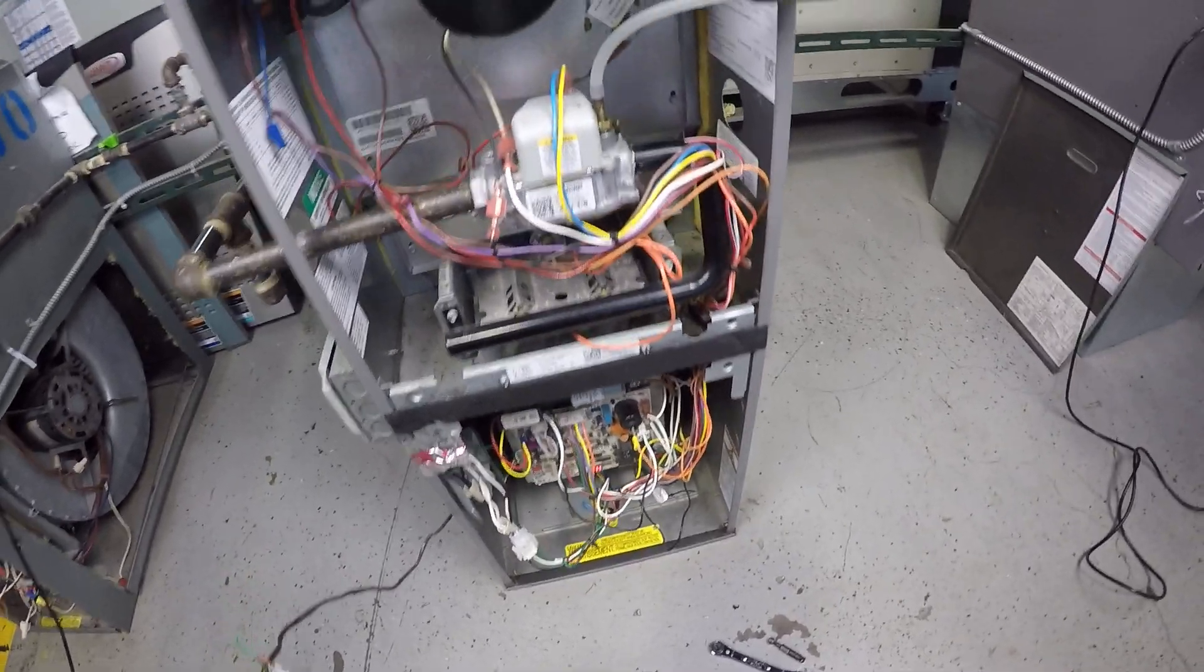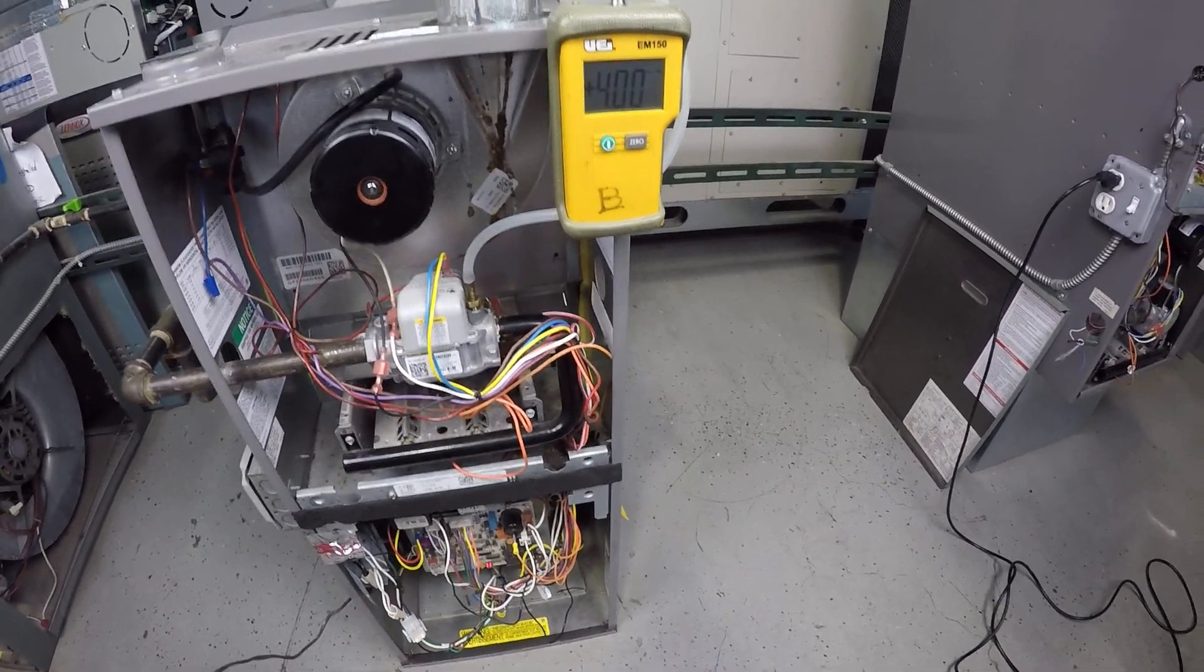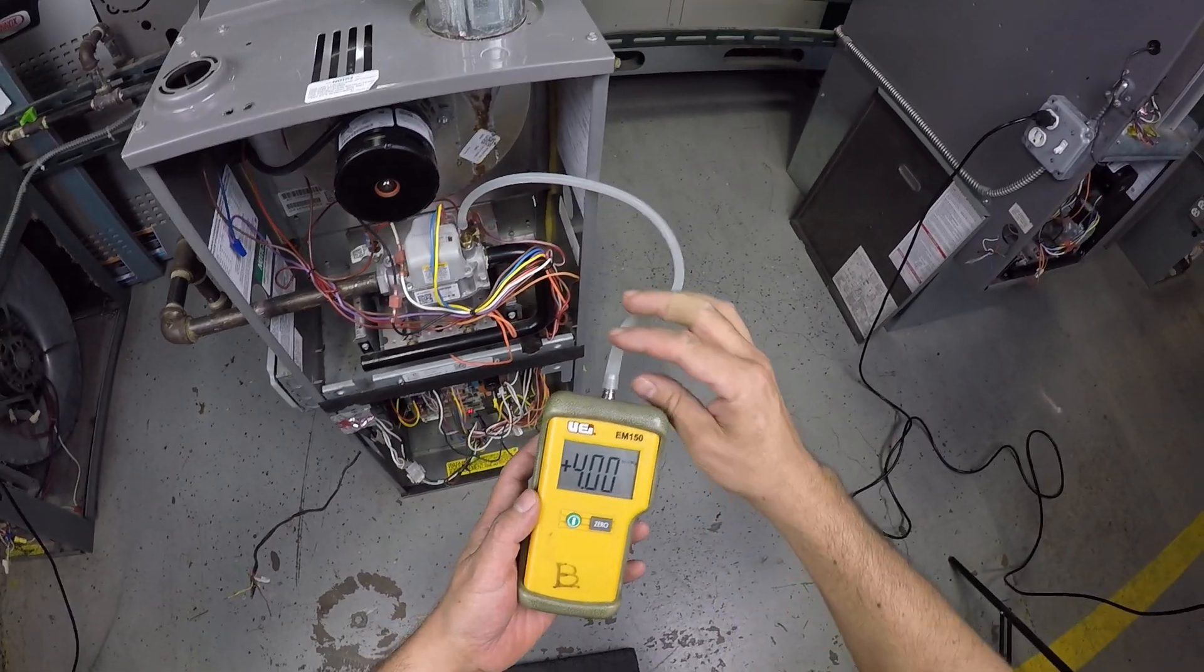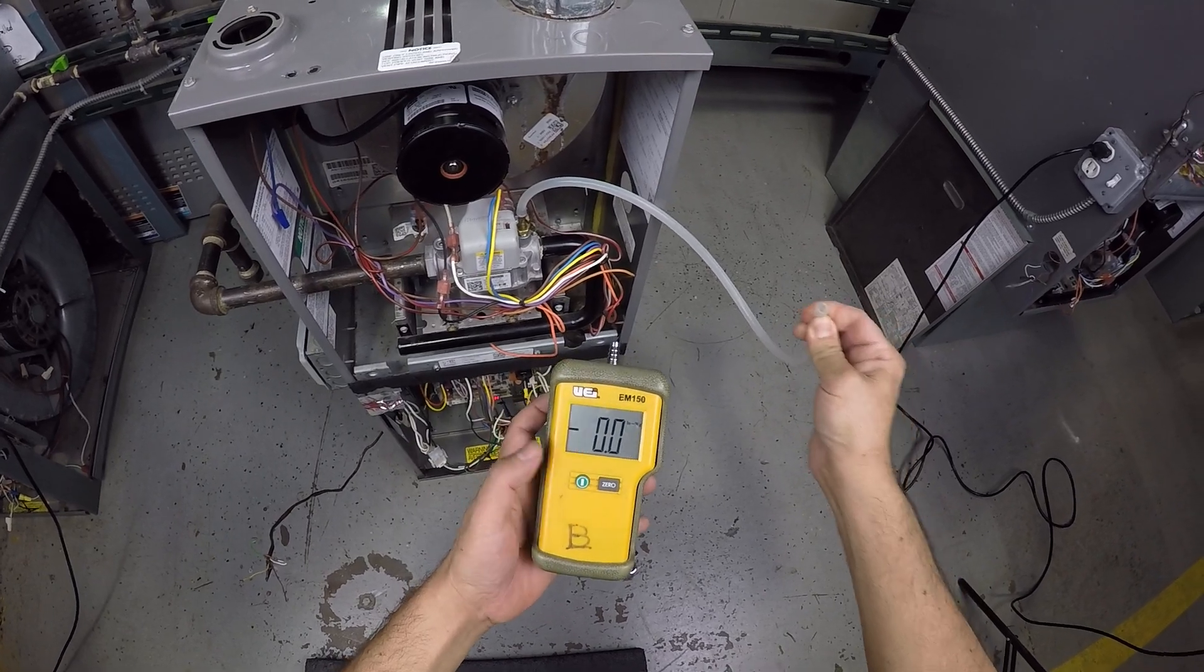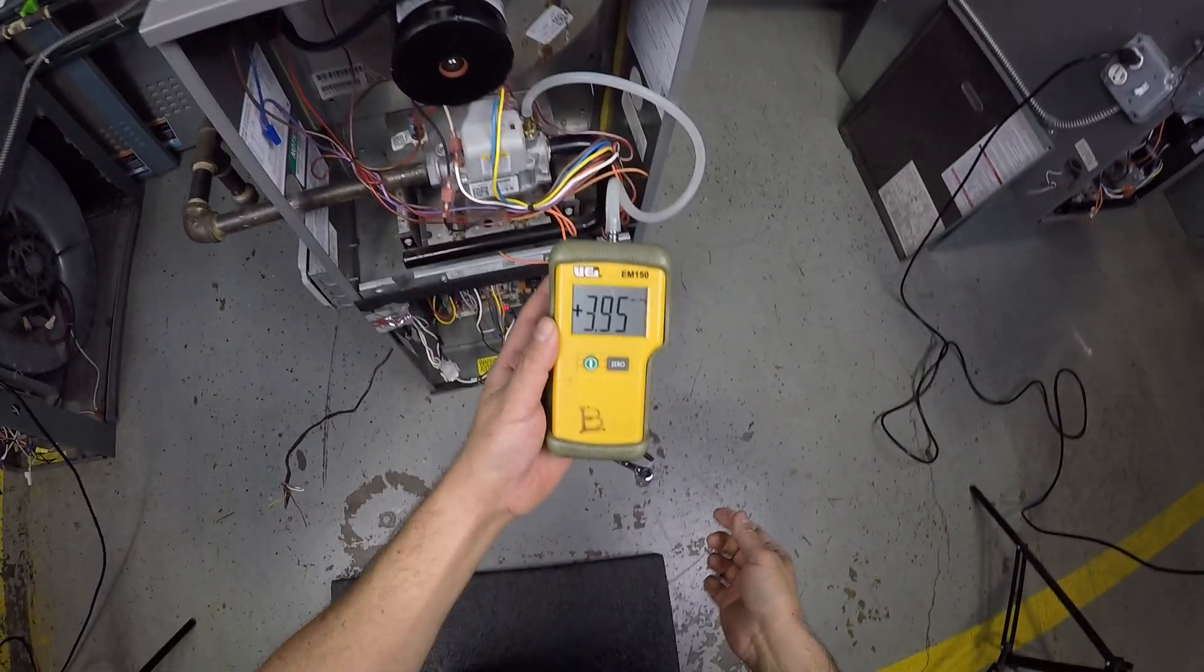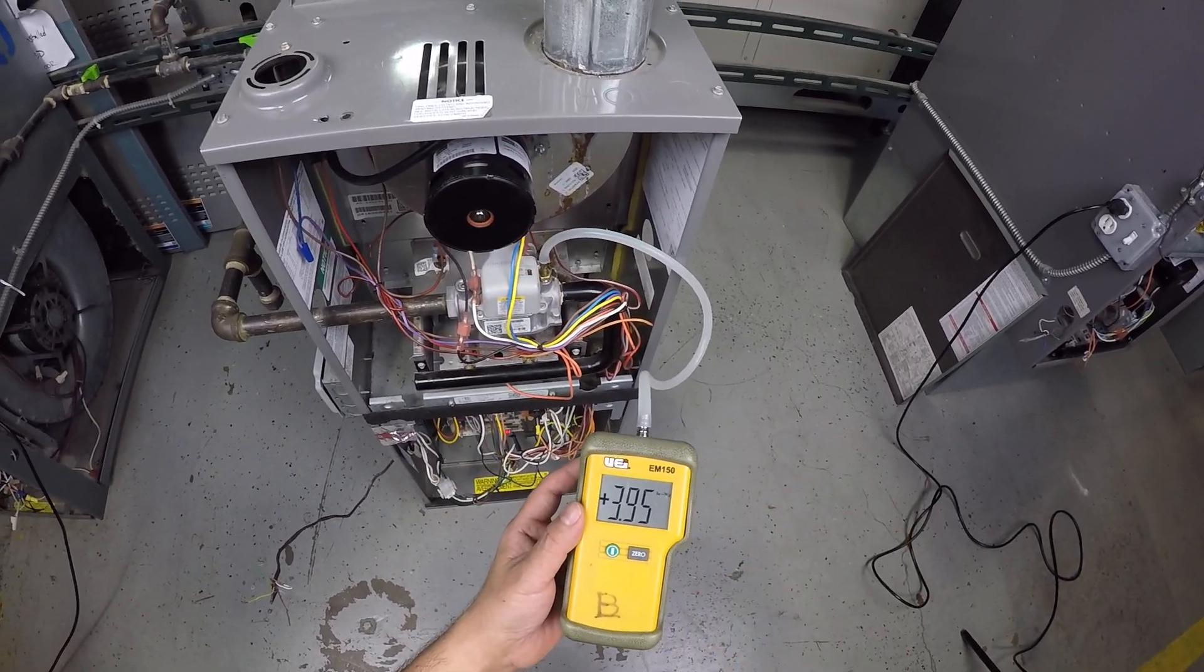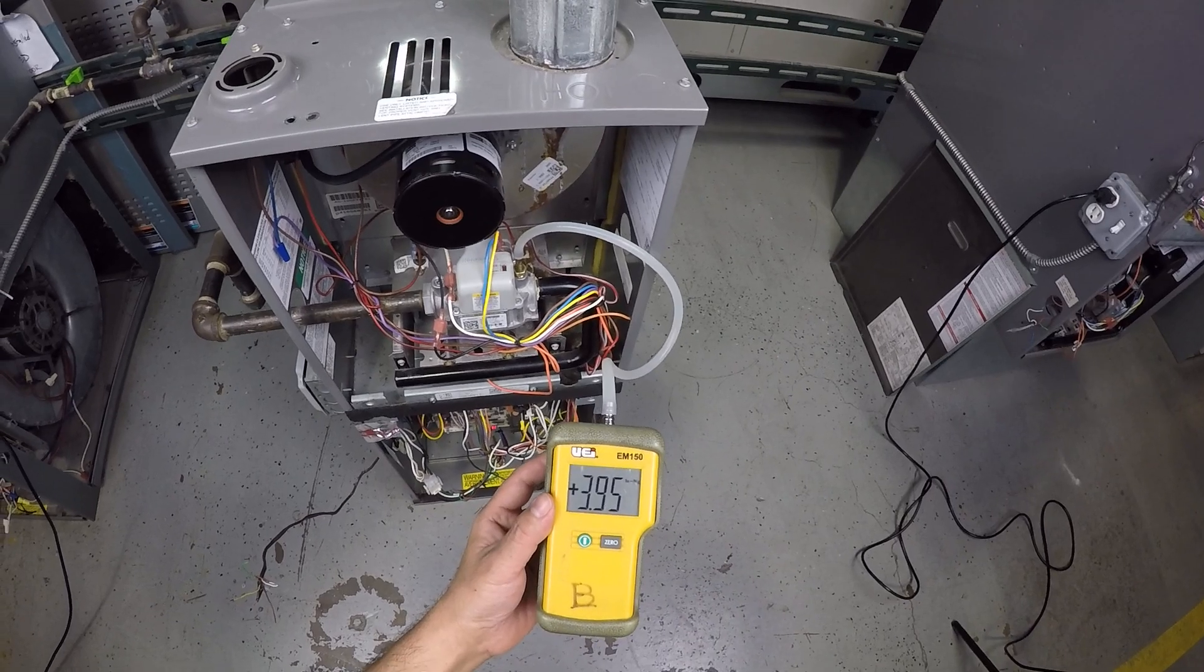Burner's on. And now, let's check the gas pressure. My gas pressure is four water columns. Once again, what I like to do is remove the connection, make sure it's zero, and connect it back. This is what I normally like to do. It went down a little bit. Normally, the gas pressure going to the manifold is 3.5. We've got 3.9. So, we can probably adjust it. But that's going to be a different video. This is just how to check the pressure in and out of the gas valve.